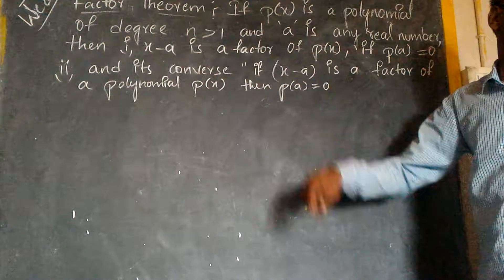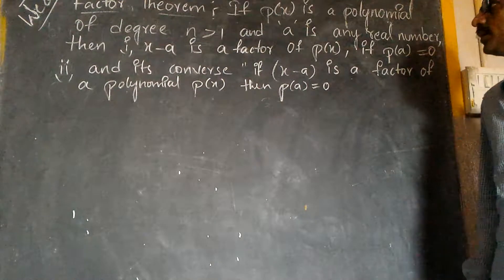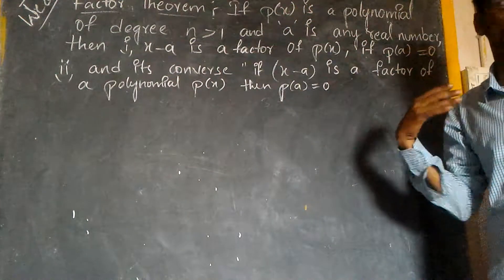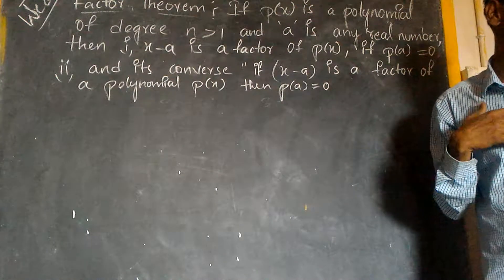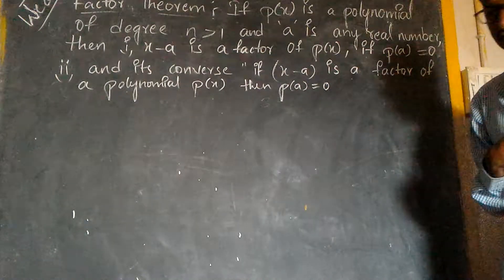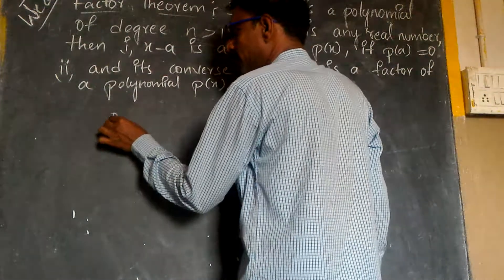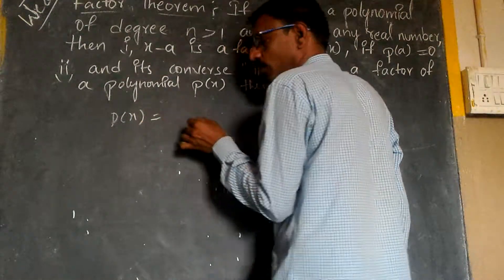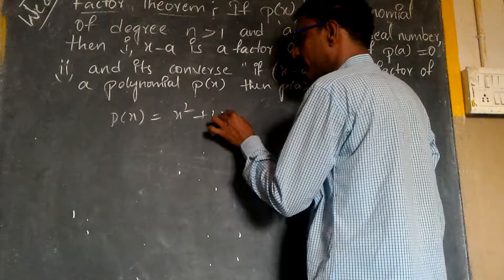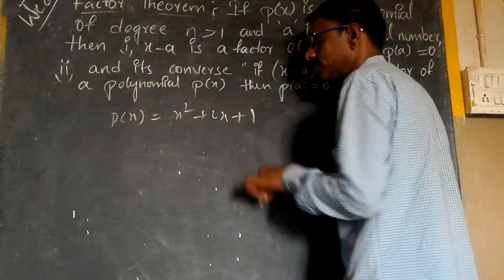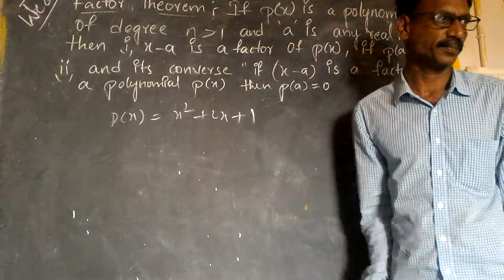Now we will see the characteristics. If p of x is a polynomial, we do not know that polynomial. Let us take some examples to understand what is a polynomial. This is my p of x is a polynomial. I would like to take x square plus 2x plus 1. This is a polynomial with degree 2.